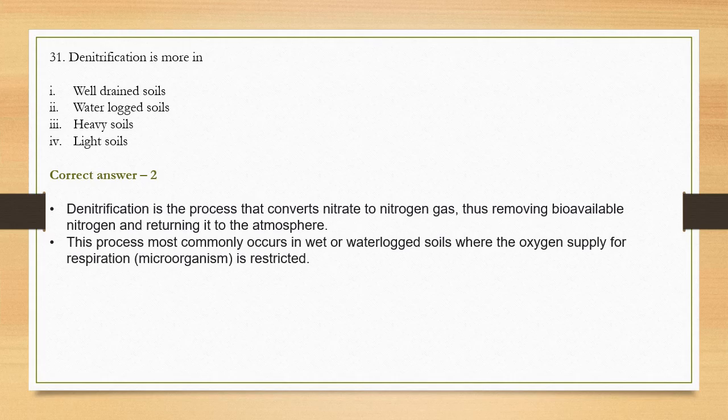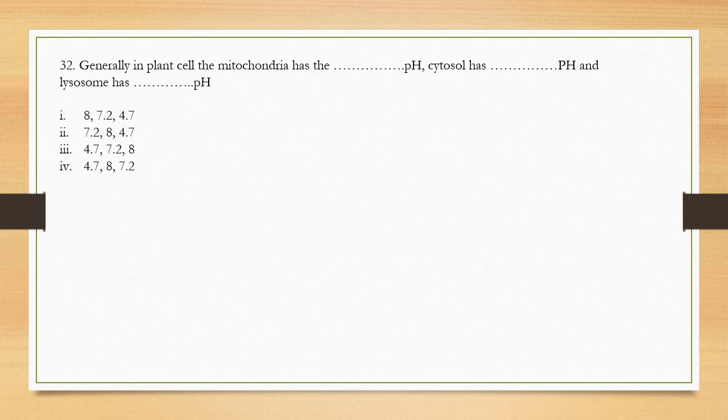Nitrogen fixation converts nitrogen to ammonia so it can be assimilated by plants. This is carried out by microorganisms like bacteria such as Nitrosomonas, Nitrobacter, and Nitrococcus. In waterlogged soils, oxygen supply is reduced, so denitrification increases — that is why option 2 is the correct answer.